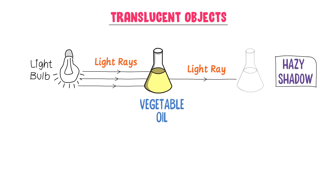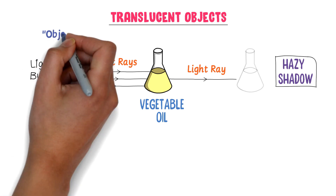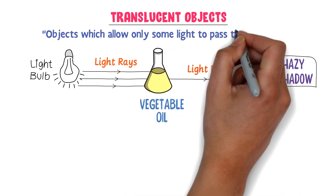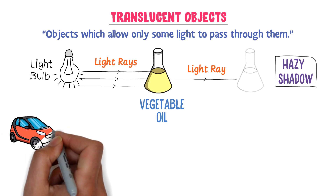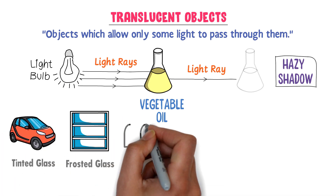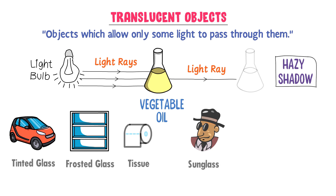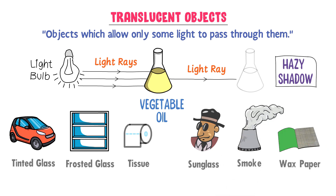Therefore, we define translucent objects as objects which allow only some light to pass through them. For example, tinted glass, frosted glass, tissue, sunglasses, smoke, wax paper, colored syrup, etc. These all objects are translucent objects and they form a hazy shadow if light falls on them.